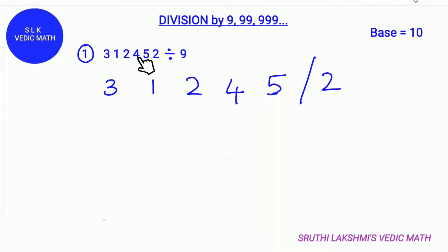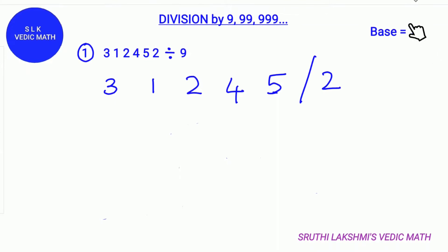3, 1, 2, 4, 5, 2 divided by 9. The base for 9 is 10. In the base 10, 10 has one zero. So we put a remainder stroke one digit from the right.